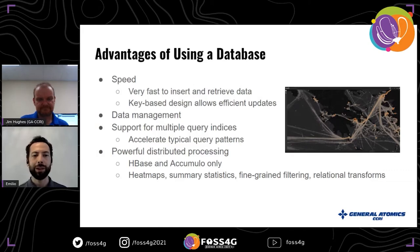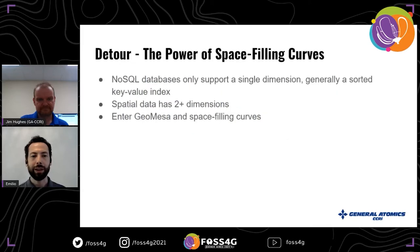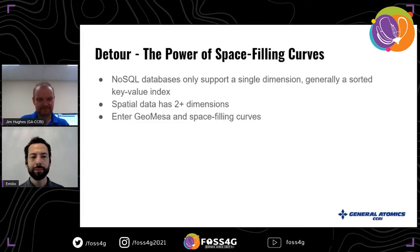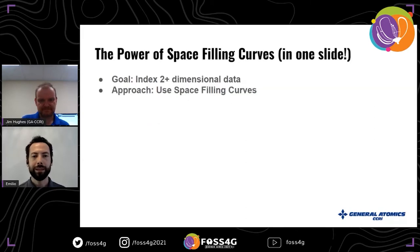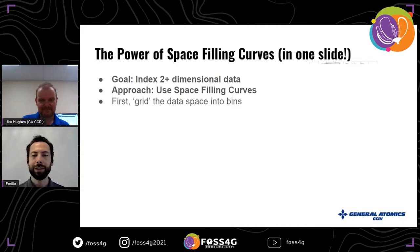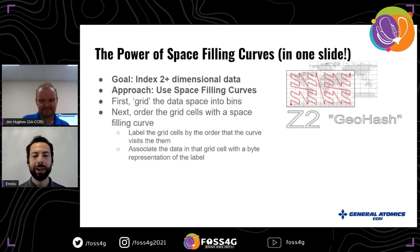As a detour, let's talk about the power of space-filling curves — sort of the magic behind GeoMesa. These NoSQL databases only support a single dimension: a sorted key-value index. Spatial data has at least two dimensions, often more, so GeoMesa uses space-filling curves to bridge that gap. The goal is to index two-or-more-dimensional data in a single dimension. We first grid up our data space into bins, then use a space-filling curve to trace through all the grids and assign each one a number. GeoMesa uses a Z-curve, which has the advantage of being extremely fast to compute.